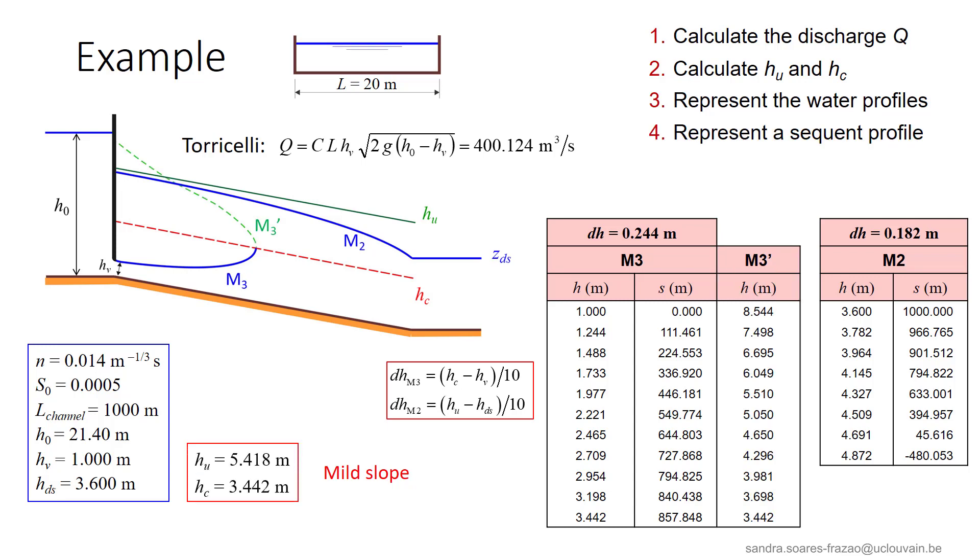Then, to find the position of the hydraulic jump, we calculate the sequent profile M3 prime, in which each water depth corresponds to the sequent depth of the point of the M3 profile. So these are always sequent depths. The values are indicated in the table.